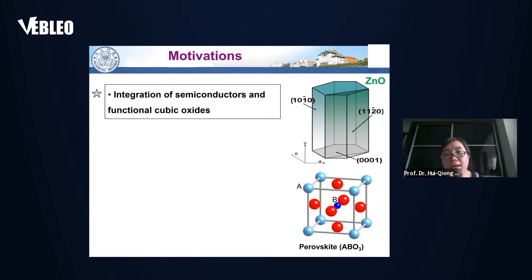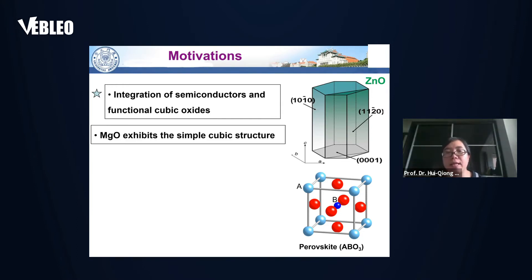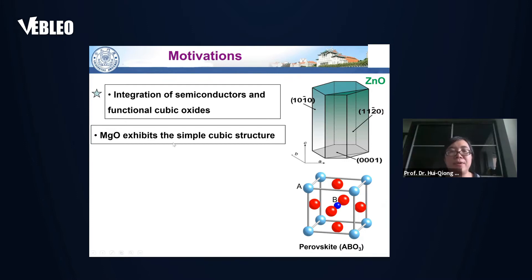Zinc oxide is the typical wide band gap semiconductor. At room temperature, it crystallizes in a hexagonal structure. A lot of people choose hexagonal substrates to grow this type of material. However, we choose a different substrate with a cubic structure, because we saw the need to integrate zinc oxide as the active device with specific devices that usually require a high dielectric constant — for example, strontium titanium oxide, which has a perovskite cubic structure. We also chose the simple cubic structure of magnesium oxide, and some people study the alloy of magnesium oxide and zinc oxide to tune the band gap for wider applications.